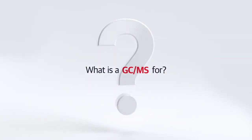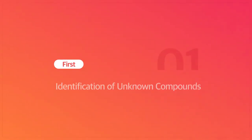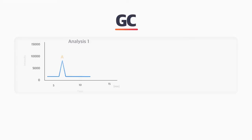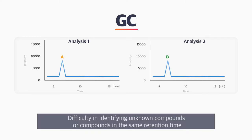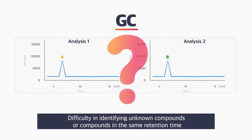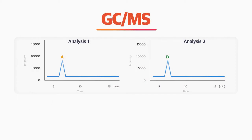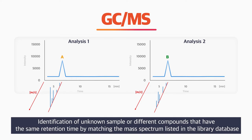What is a GC-MS for? First, identification of unknown compounds. It's hard to identify unknown compounds where the compounds have the same retention time with GC. GC-MS can identify unknown samples or different compounds that have the same retention time by matching the mass spectrum listed in the library database.